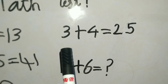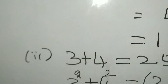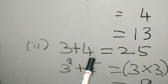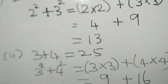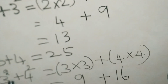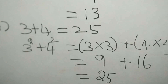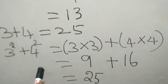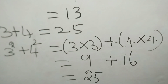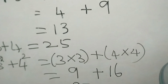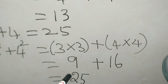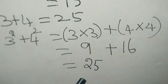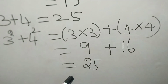Let's solve 3 plus 4 equal to 25. Question number 2: 3 plus 4 equal to 25. So 3 turned into 3 squared, 4 turned into 4 squared. 3 squared means 3 into 3; 4 squared means 4 into 4. 3 threes are 9; 4 fours are 16. 9 plus 16 equal to 25.